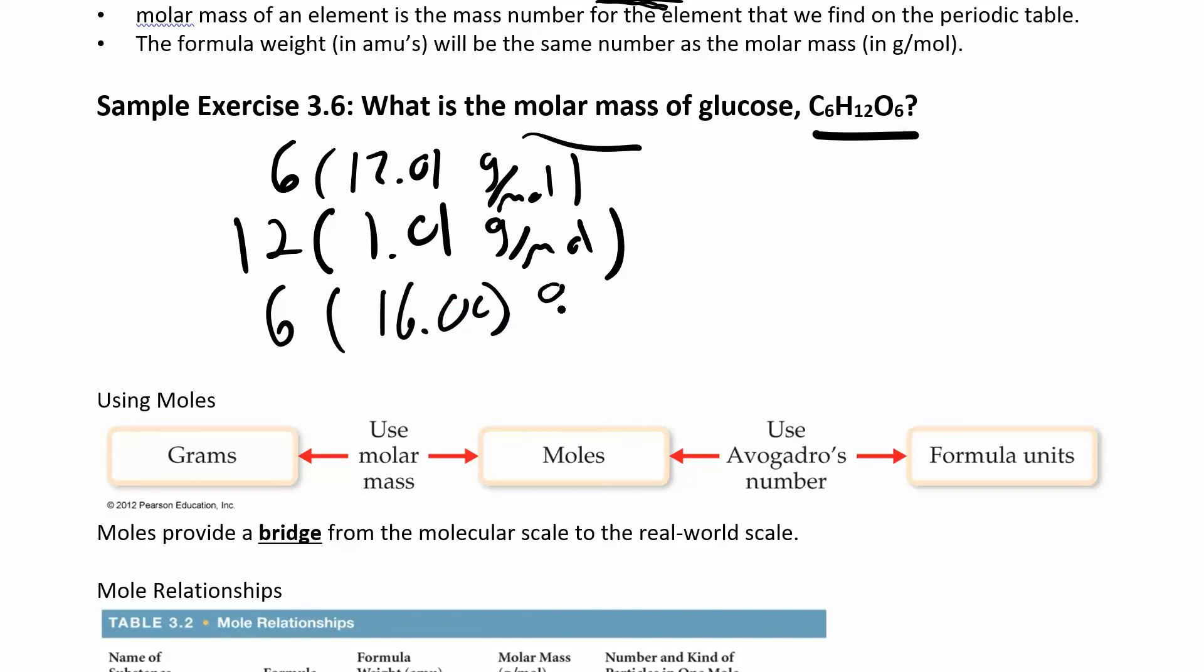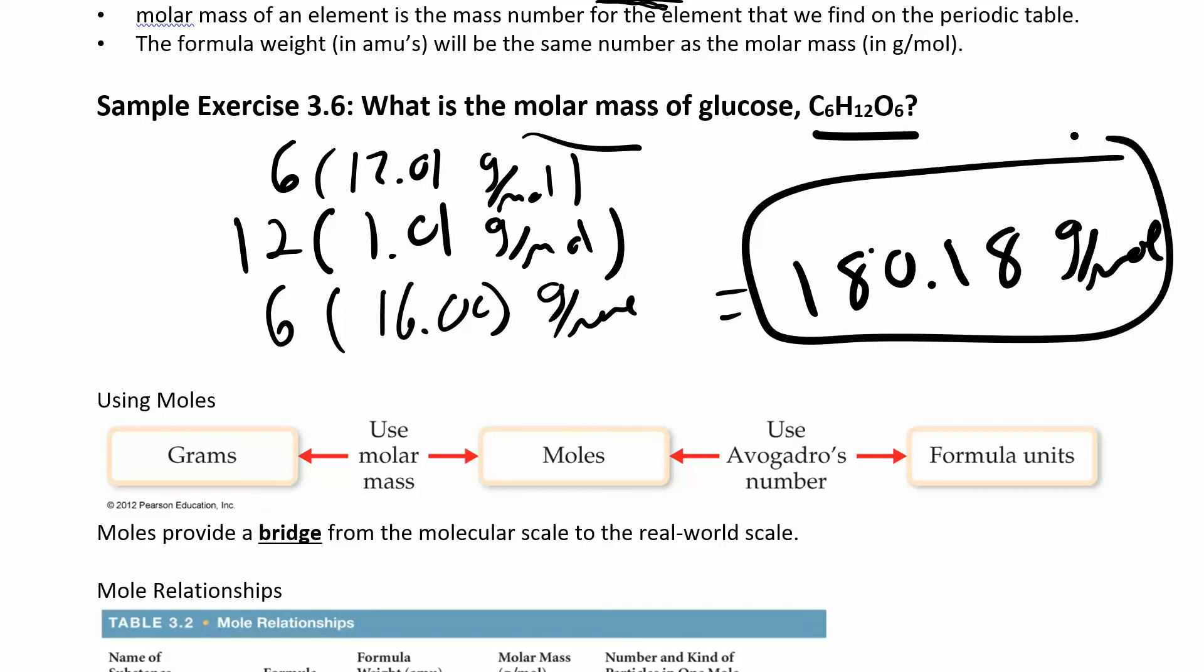And this one's just 16. So when you work all that out, you end up getting 180.18 grams per mole. All right. So again, grams per mole, if I were to weigh out 180.18 grams of glucose, I know I have one mole. Or if I was looking for one mole of glucose, that's how much it would weigh. And that's a lot of atoms.